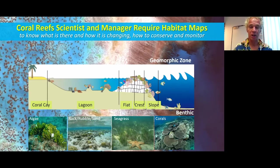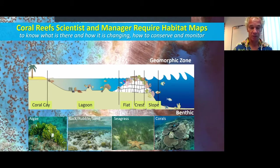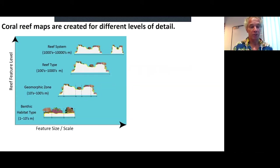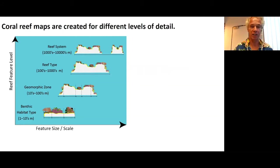These geomorphic zones tell us something about how they are formed, where they are, and how they are protecting. Usually we know that if you want to dive and see fish, you go to the slope and don't end up in the lagoon. If you look at habitat maps, you can look at different scales. We have these different scales: reef system, reef type, geomorphic zone, and benthic.